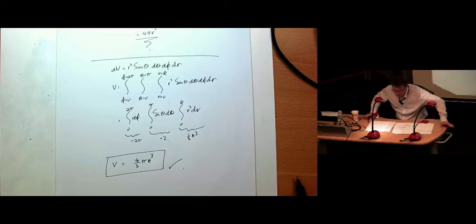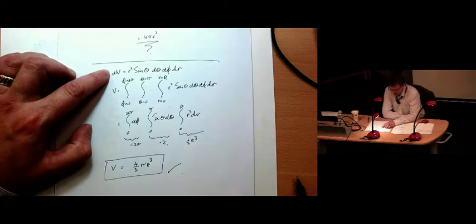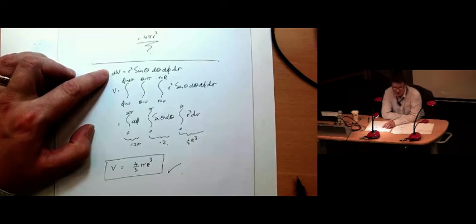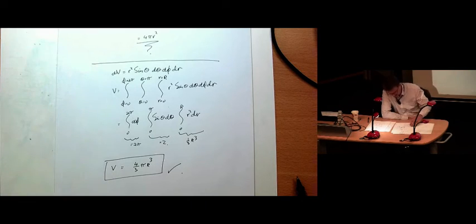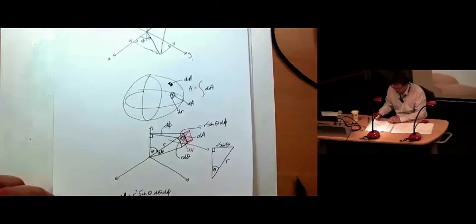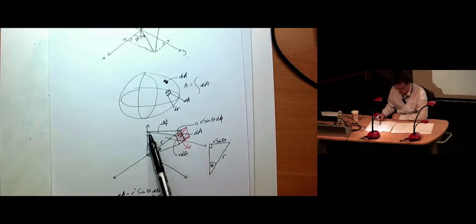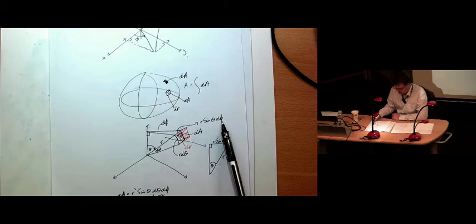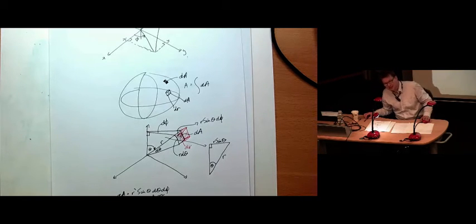4 thirds pi r cubed. Never again do you ever have to remember the volume of the cube. You just have to remember dv is equal to r squared, sine theta, d theta, d phi, d r. Draw a little picture. The only tricky thing with 3D coordinates is to get this length here. You have to project back onto the z axis. And then you get r sine theta, d phi. So that's the only tricky bit that every five years if I don't do this, I will forget.